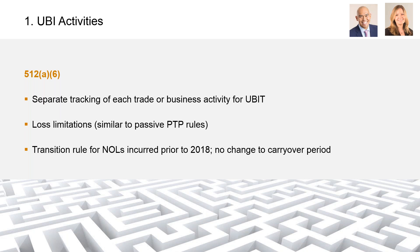Under a special transition rule, NOLs in place before 2018 may still be applied to all net unrelated business income — it's only newly incurred losses in 2018 or later that must be siloed. We don't yet know the level of granularity required in separating business activities, but currently we're treating being a partner in an investment partnership as one activity. Until further guidance arrives, we're not siloing individual K-1s, and we'll remain alert for guidance that may specify how to treat partnership activity.